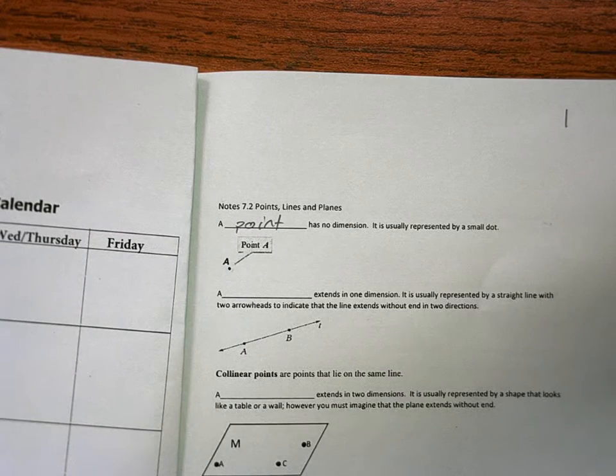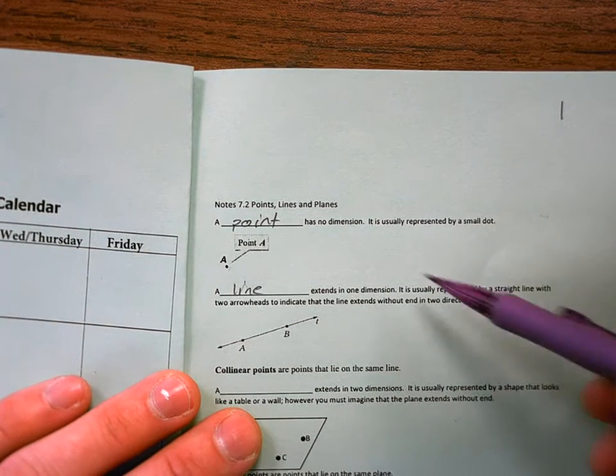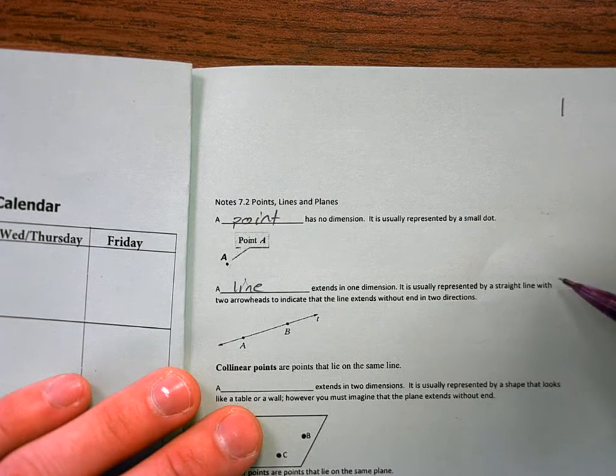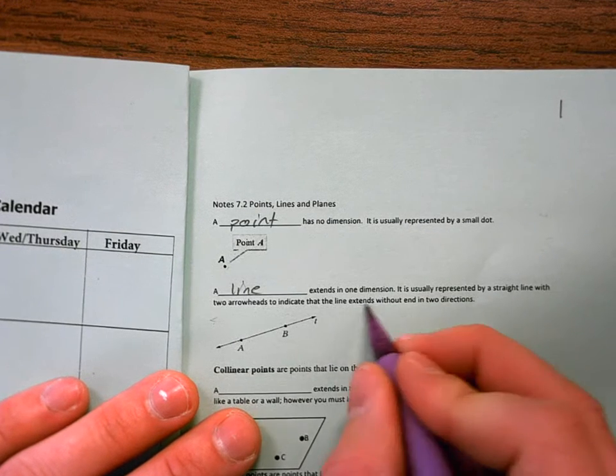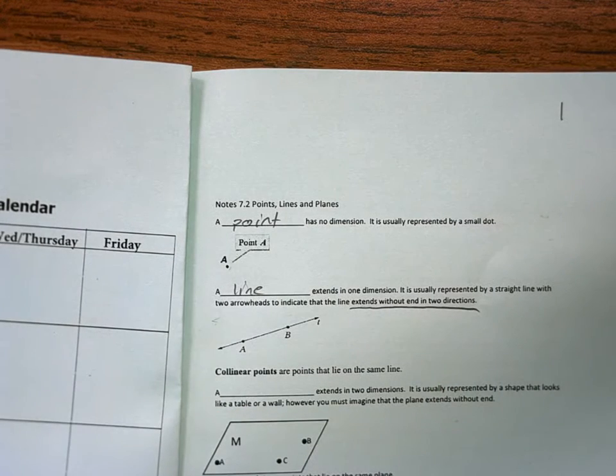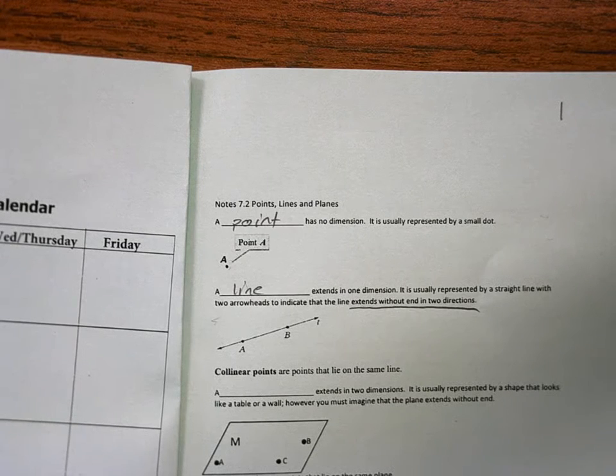Next one, a line extends in one dimension. It is usually presented by a straight line with two arrowheads to indicate the line extends without end in two directions. That's what those arrows mean. Those arrows mean that they extend in both directions with no end. They will go on forever.